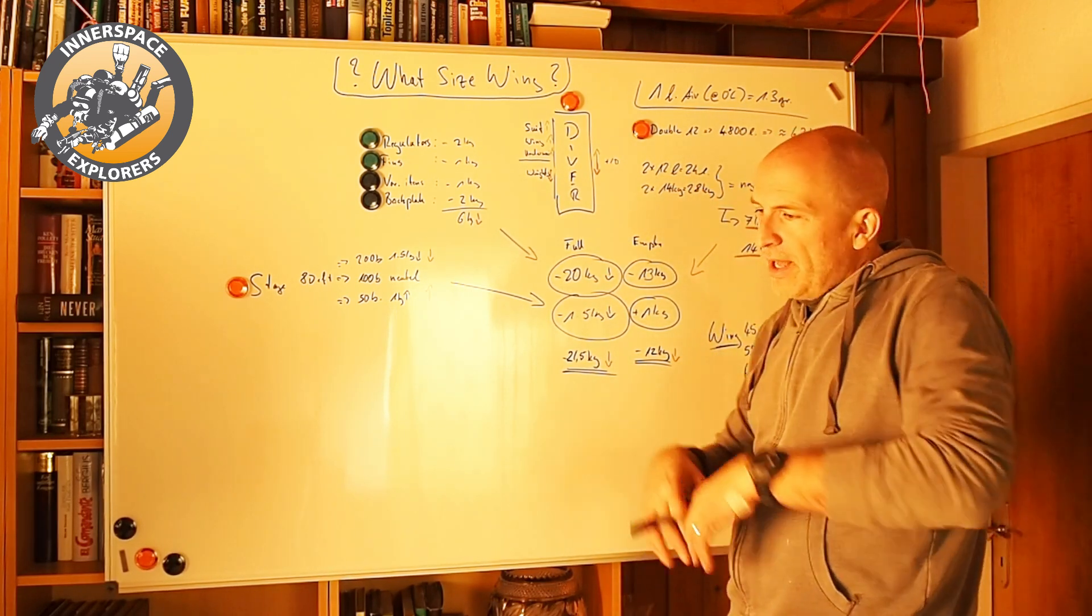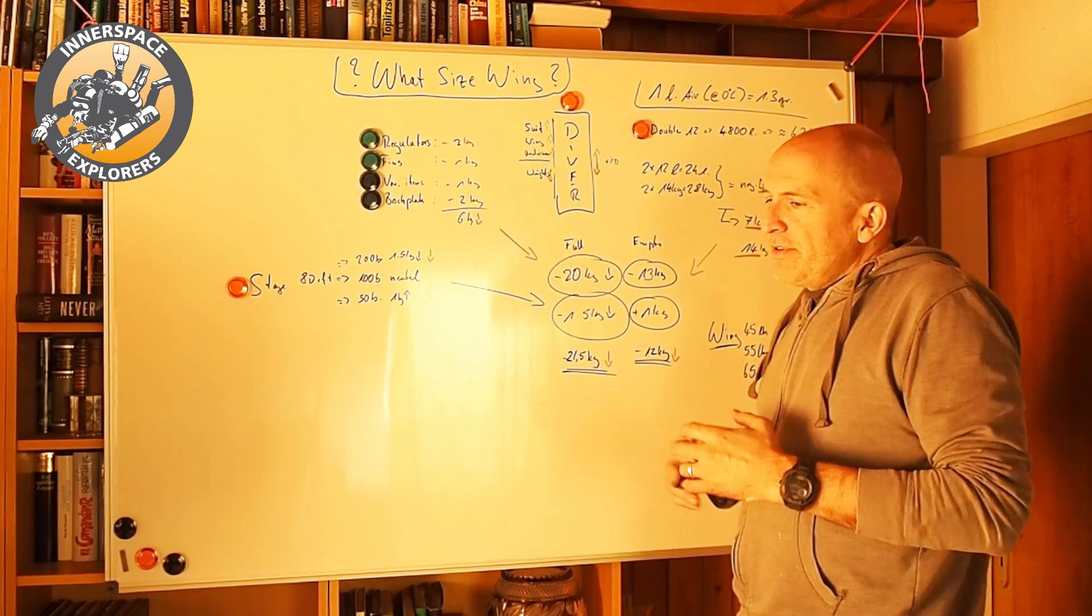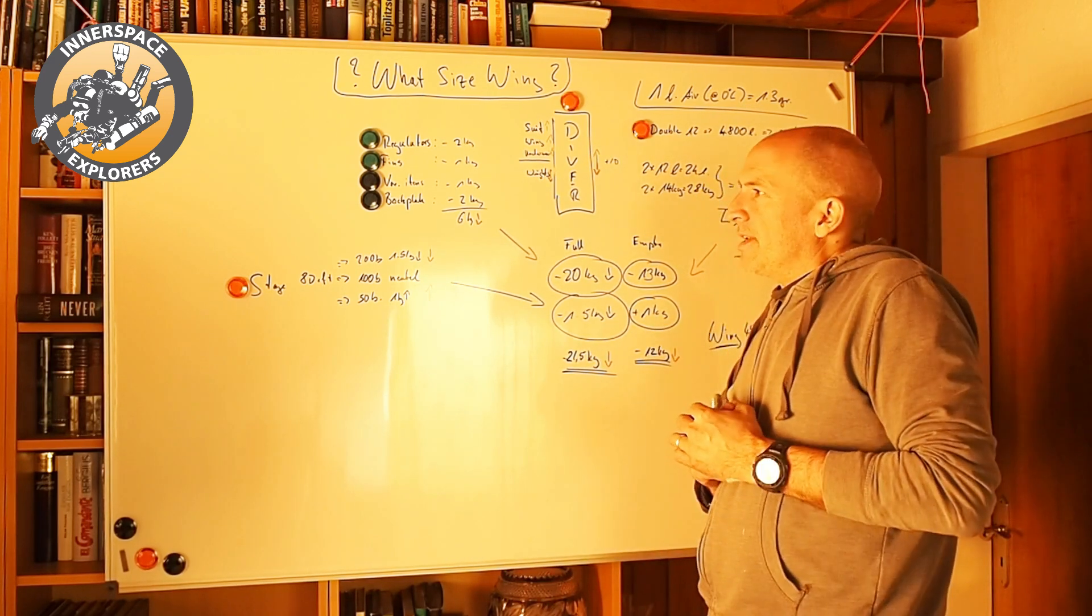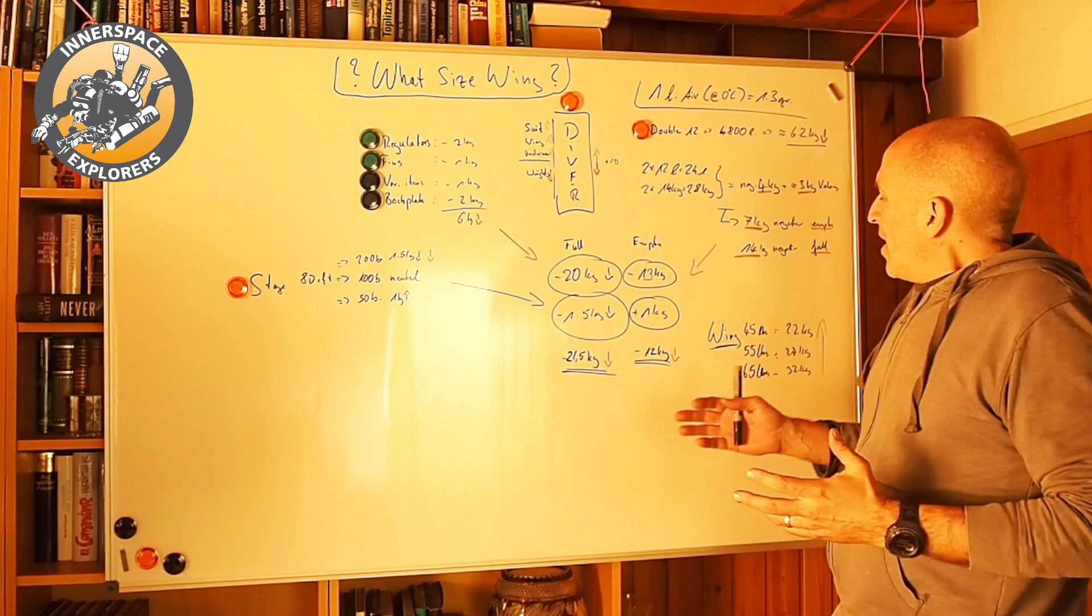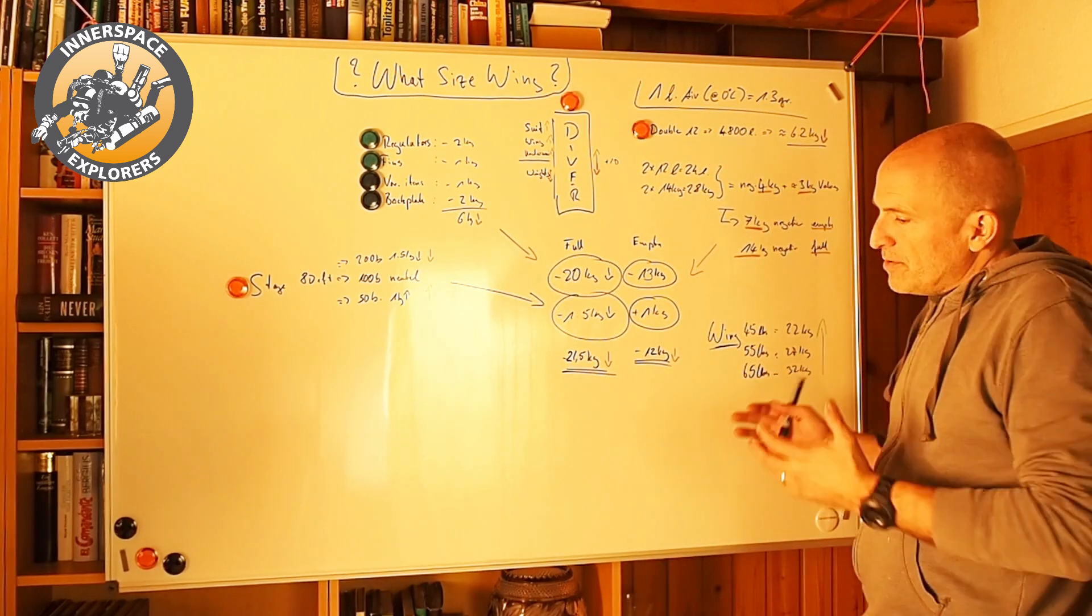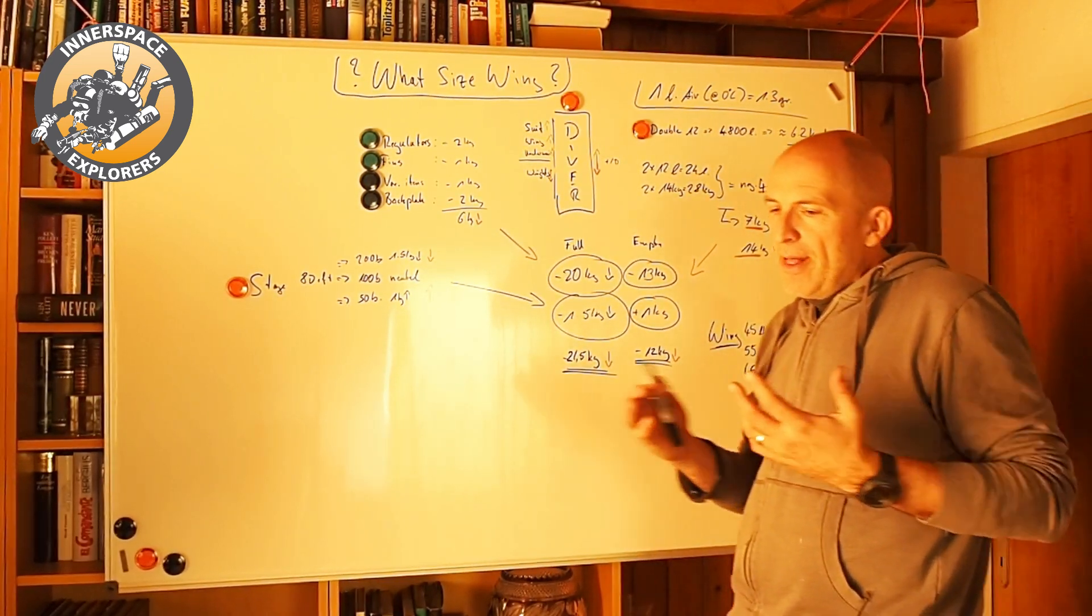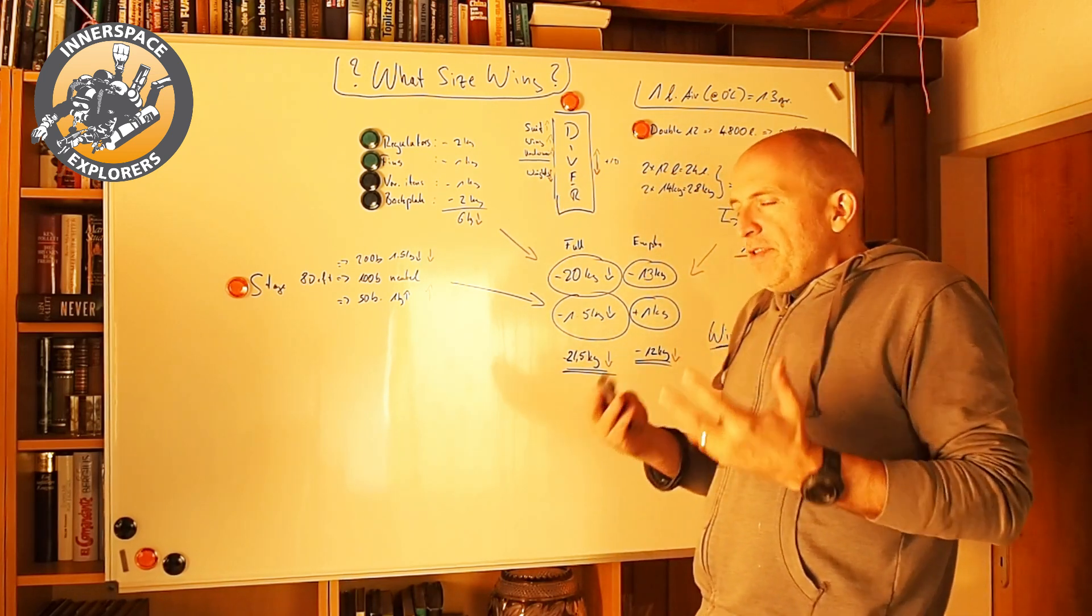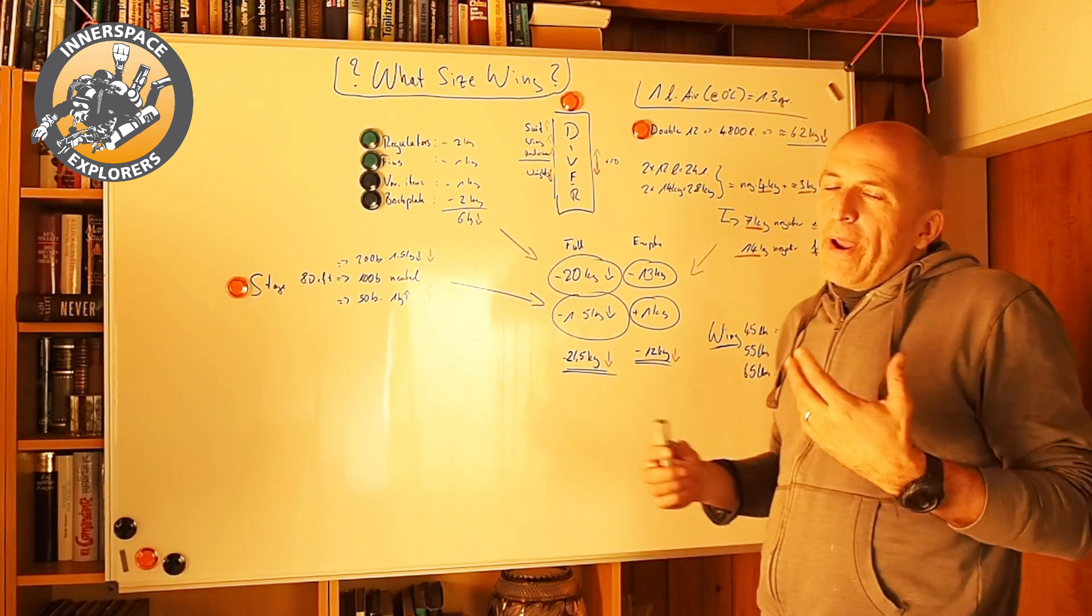So what I do, I use a 55-pound wing in that configuration. So that's 27 kilos. That gives me plenty of safety margin, so to speak. And the 65 would be way too big. So 65, I would probably use if I dive double 18 and three stages. Then that would make more sense. You can do the calculation by yourself.